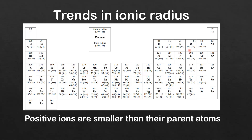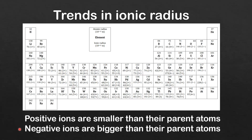Next we'll look at negative ions, starting with oxygen. Oxygen forms a 2− ion and the ionic radius is 140×10⁻¹² meters, while the atomic radius is 64×10⁻¹² meters — so for negative ions the ionic radius is greater than the atomic radius. Looking at chlorine, which forms 1− ions, the ionic radius is bigger than the atomic radius. So negative ions are bigger than their parent atoms.